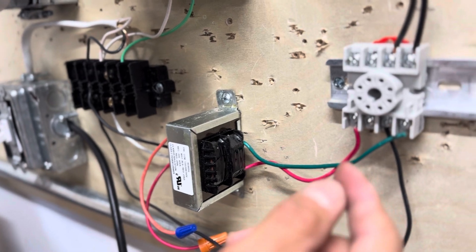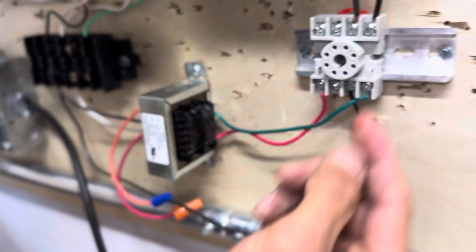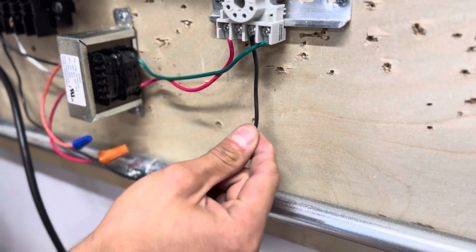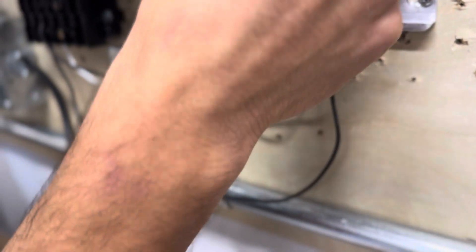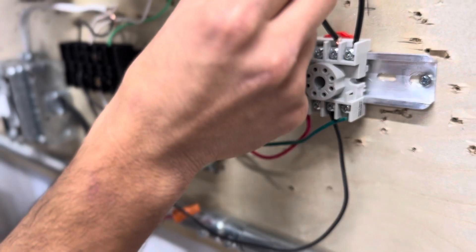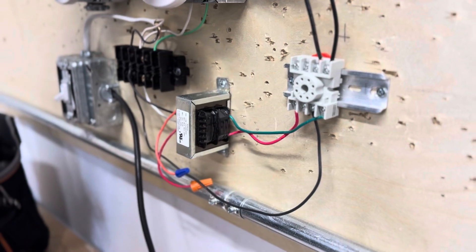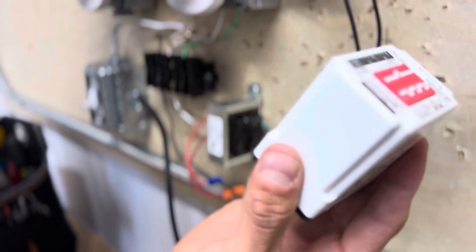Now let's go over your normally closed and normally open contacts. So you have a 120 volt source coming from here and you have 120 volt feeding out from your normally closed. This means that your light is always on until it is switched on otherwise becoming normally open by this guy right here.